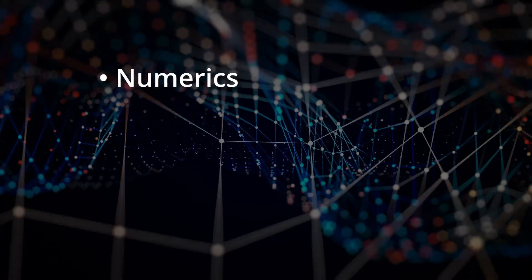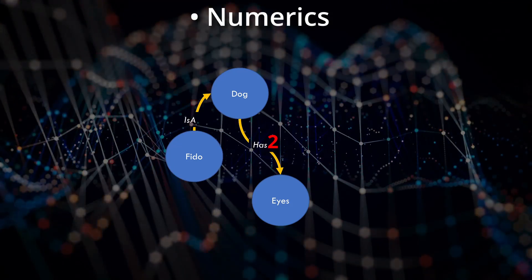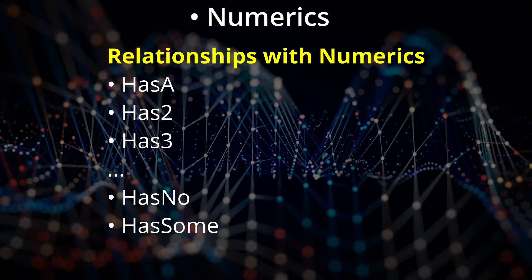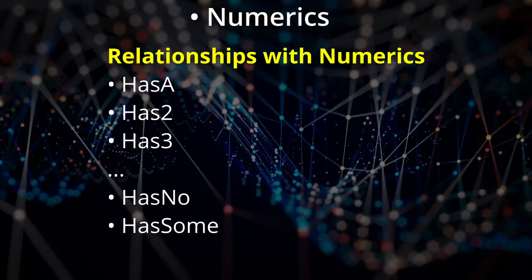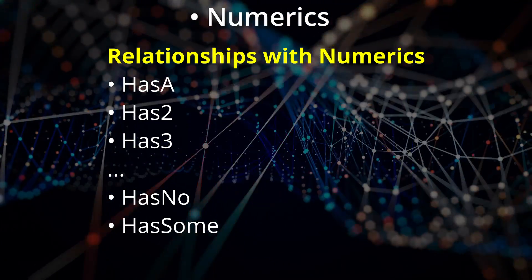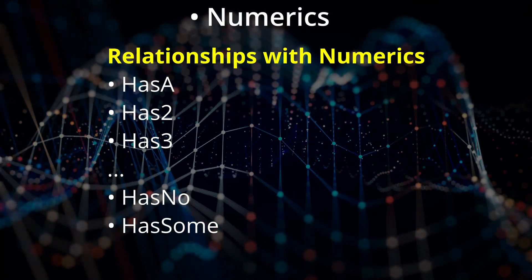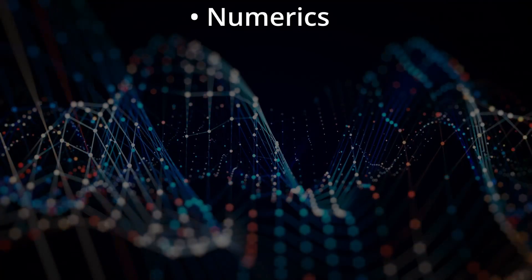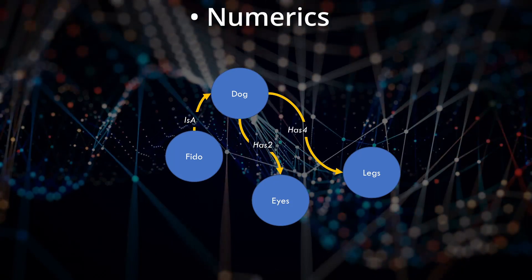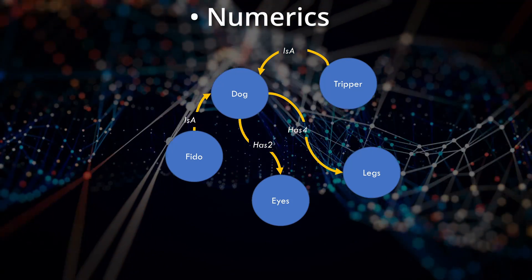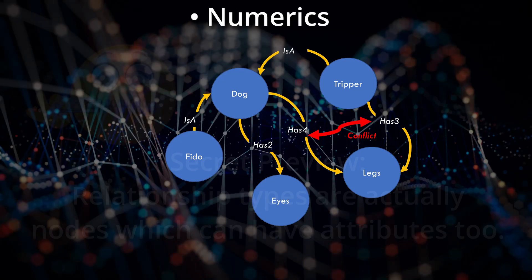Next, numerics. When we say that a dog has two eyes, the two is not an attribute of the eyes - it's an attribute of how many the dog has. So let's address this problem by adding a suite of 'has a' relationship types with numeric attributes: 'has two,' 'has three,' 'has four,' etc. We'll continue to use 'has a' to mean 'has one,' and we can invent 'has no' to mean doesn't have any, and we'll invent 'has some' to represent an indeterminate number greater than zero. You can immediately see that 'has' relationships interact with exceptions. A generic dog has four legs, but Tripper is a dog and Tripper has three legs - the exception process will take care of everything. In subsequent videos I'll show an even cooler way of representing this.